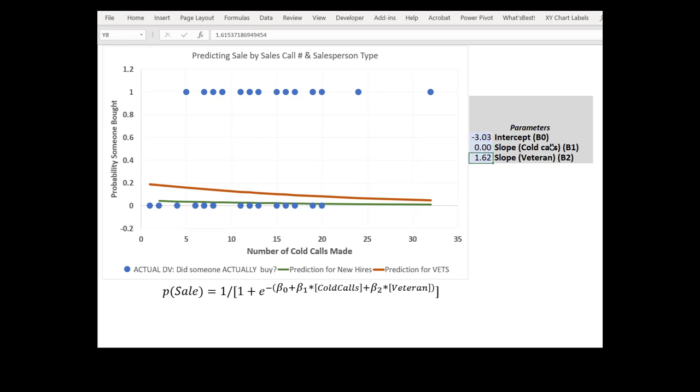And at 0 the line's flat, meaning no matter how many cold calls you make because it's multiplied by 0 it has absolutely no effect on the probability of sale. I'll switch it back to 0.15.